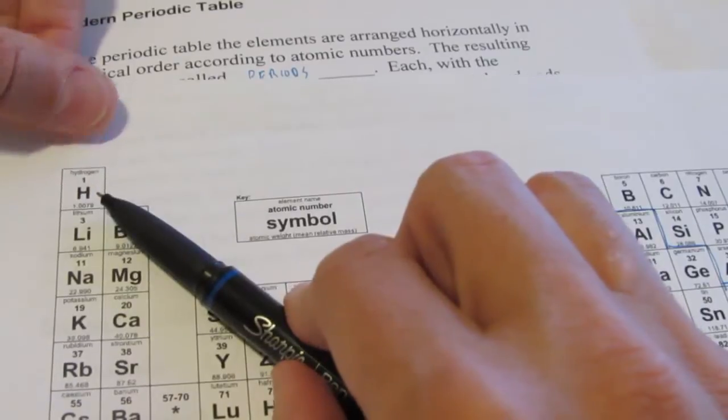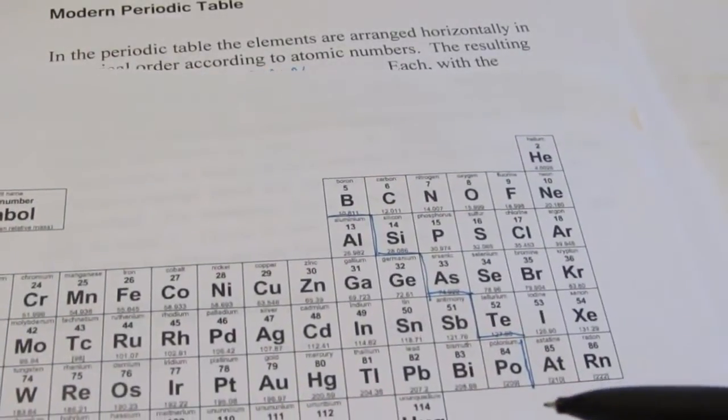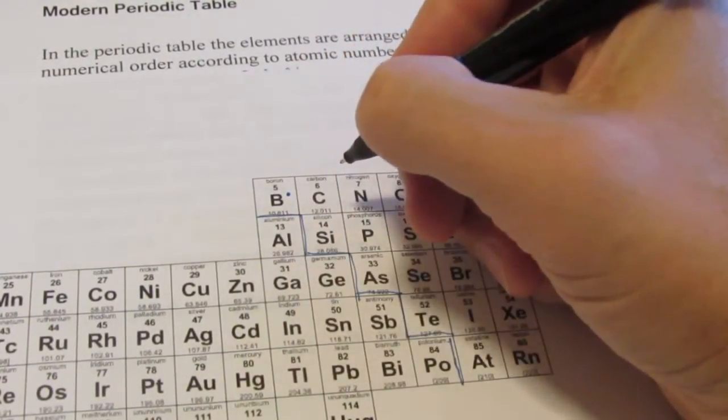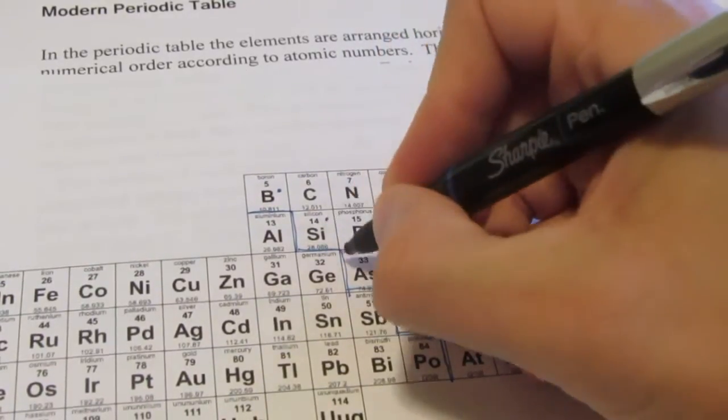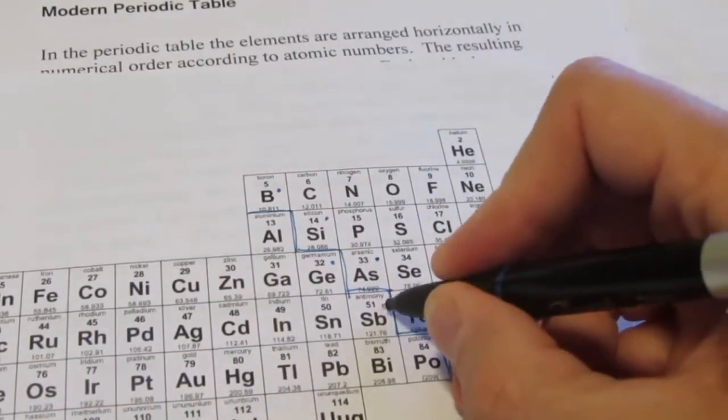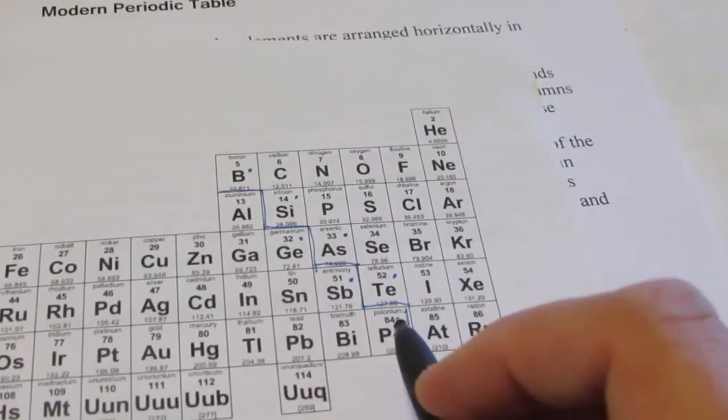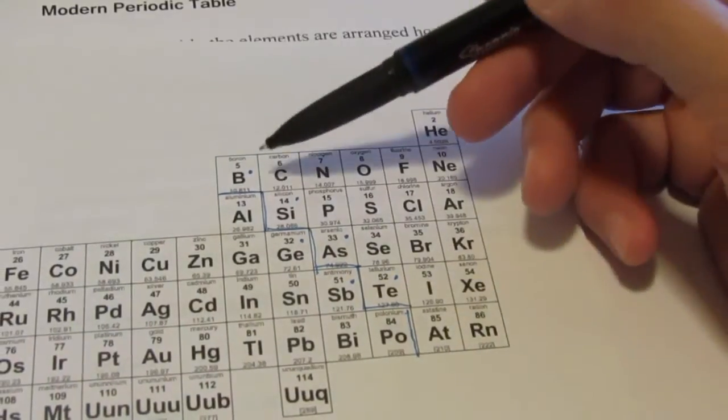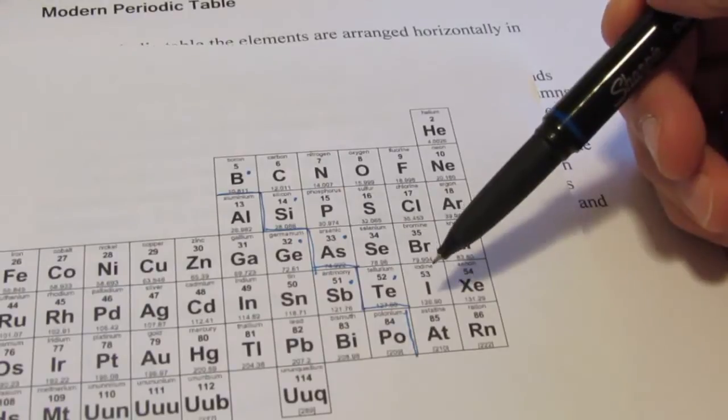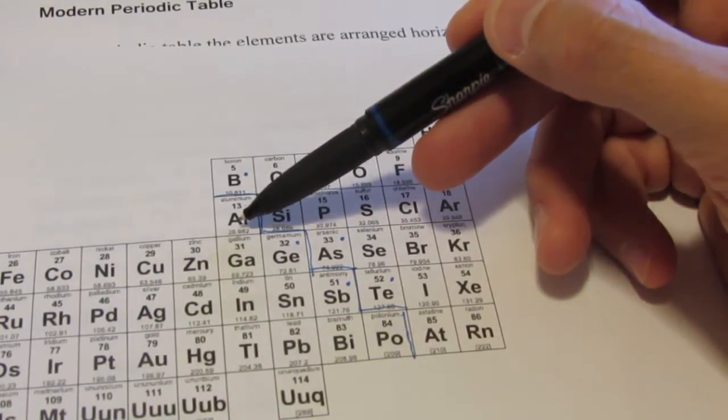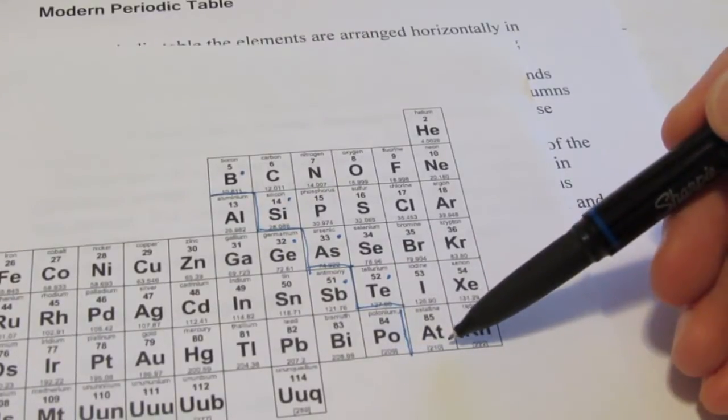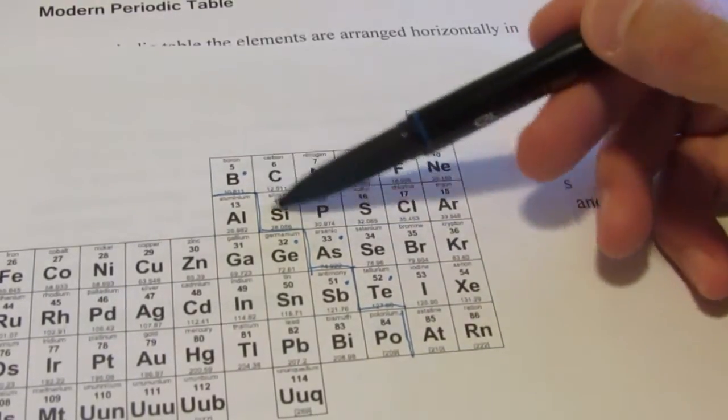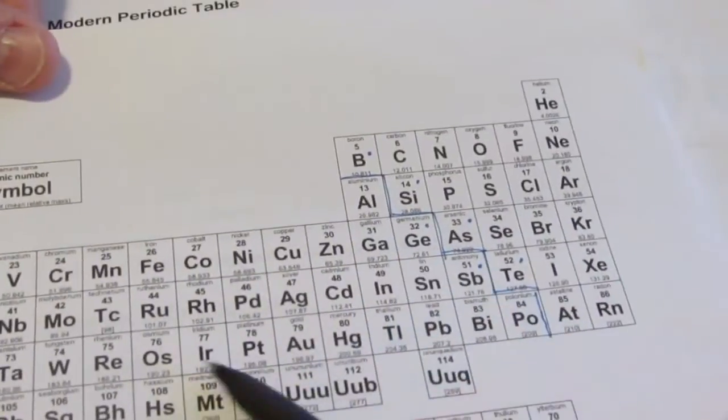If I were to draw a line beginning underneath boron and create a staircase, so then I go beneath silicon, then arsenic, then tellurium, and right between polonium and astatine. These elements over here on the right side are considered to be non-metals. All of the others on the left side, with the exception of a few, are considered to be metals. Hydrogen is one of those exceptions. It's actually a non-metal. We also have some metalloids. The metalloids are essentially on the staircase. Boron is considered to be a metalloid. So is silicon, germanium, arsenic, antimony, and tellurium. And often times, you will see some textbooks call polonium and astatine metalloids also. But the ones that I just put a blue dot by are commonly referred to as the metalloids. These elements have properties that are similar to non-metals as well as metals.